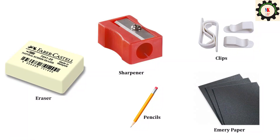Drawing pencils are of different grades. The HB pencil is a soft grade used for drawing thicker lines, borderlines, lettering, and arrowheads. The H pencil is used to draw finishing lines, visible lines, and hidden lines. An eraser is a good quality rubber used to erase unwanted lines, arcs, etc. from a drawing. Drawing clips are used to fix the drawing sheet on the drawing board; they are made of nickel-coated steel. A pencil sharpener is used to give pencils good drawing tips. Emery paper, 120 grade, is used to obtain a conical or chisel-tipped pencil.